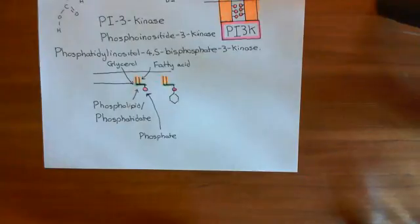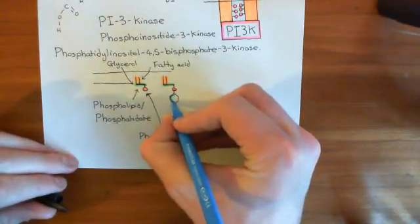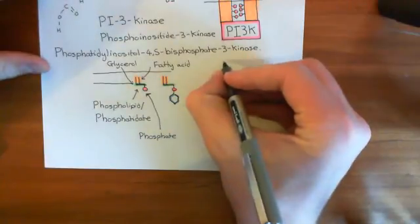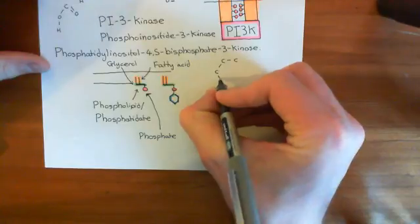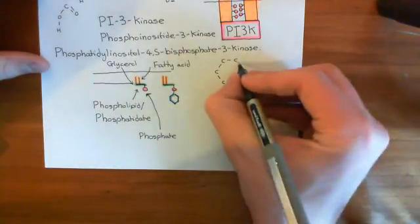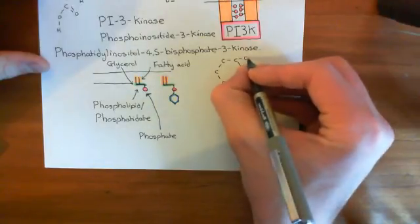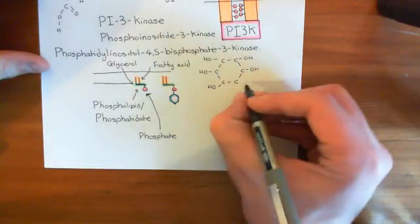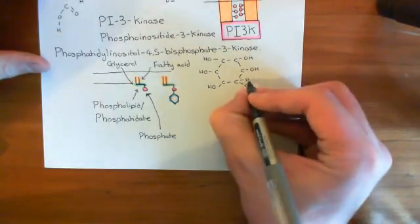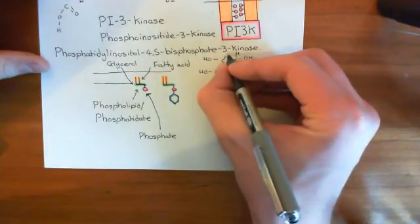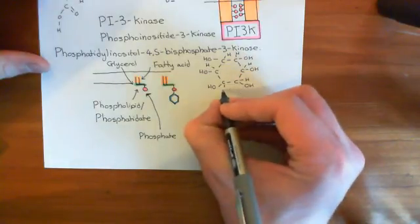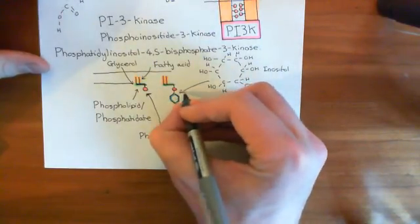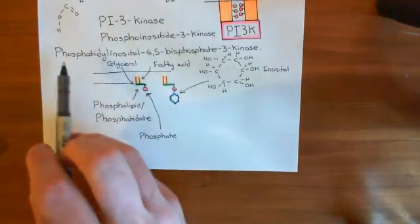Inositol is a six-carbon ring, and off every single one of the carbons you have one and only one hydroxyl group. Imagine drawing a six-carbon ring, then off every single carbon stick a hydroxyl group, and then make every other bond up with a hydrogen. That's the structure of inositol, denoted in blue. I've linked the phosphate group to one of these hydroxyl groups off what we'll call the first carbon. So this entire structure so far is phosphatidylinositol.